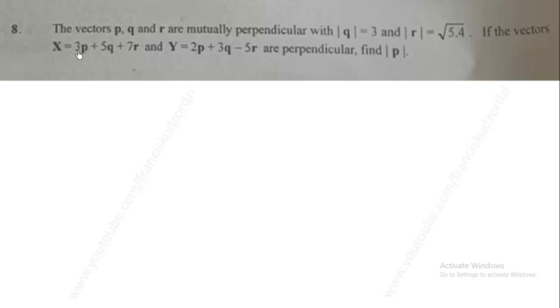Wassey 2020 elective mathematics, question 8. The vectors p, q, and r are mutually perpendicular with magnitude of q equal to 3 and magnitude of r equal to square root of 5.4. If the vectors x equal 3p plus 5q plus 7r and y equal 2p plus 3q minus 5r are perpendicular, find magnitude of p.